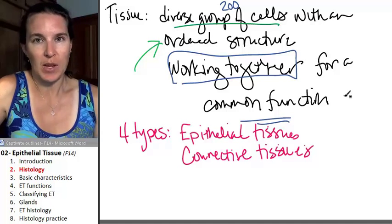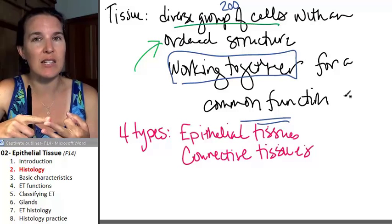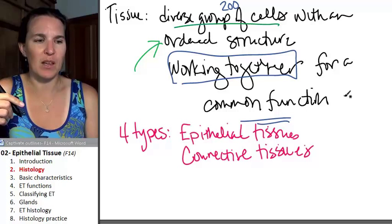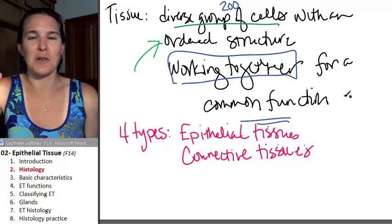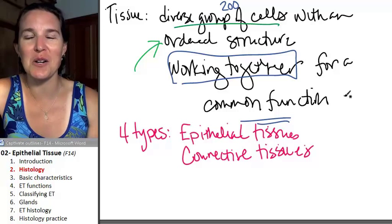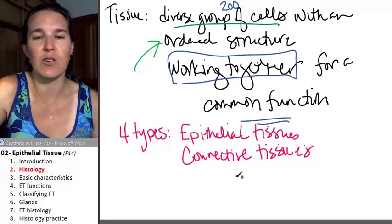Connective tissues: blood is a connective tissue, bone is a connective tissue, fat is a connective tissue, fluffy feathery tissue called areolar connective tissue is a connective tissue. Connective tissue is really, really diverse.